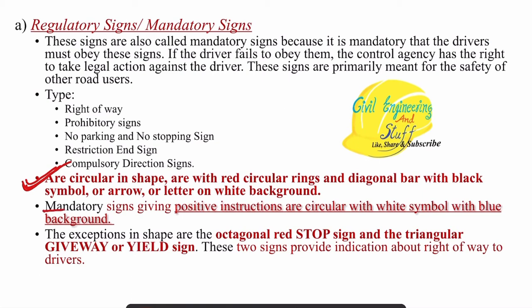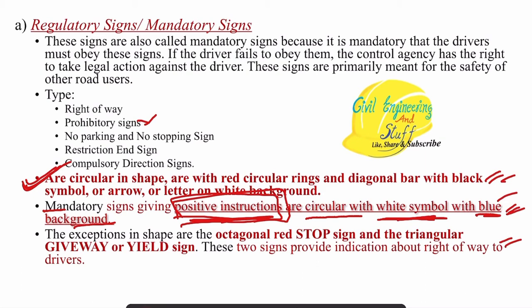If a mandatory sign is giving a positive instruction — such as 'keep left' — as opposed to negative or prohibitory instructions like stop, these are installed on a circular traffic sign with a blue background and white symbol. Two important exceptions: if we are using a stop sign, it will be octagonal in shape with a red background. If we have a give way sign or yield sign, that will be triangular in shape with apex in the downward direction.